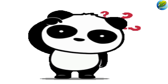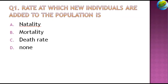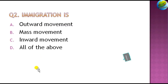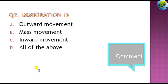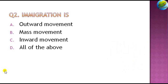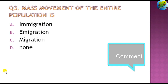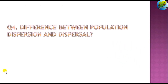Let us move on to the question part. Question 1: Rate at which new individuals are added to the population is — natality, mortality, death rate, or none of the above? Question 2: Immigration is — outward movement, mass movement, inward movement, or all of the above? Question 3: Mass movement of the entire population is — immigration, emigration, migration, or none? Question 4: What is the difference between population dispersion and dispersal?